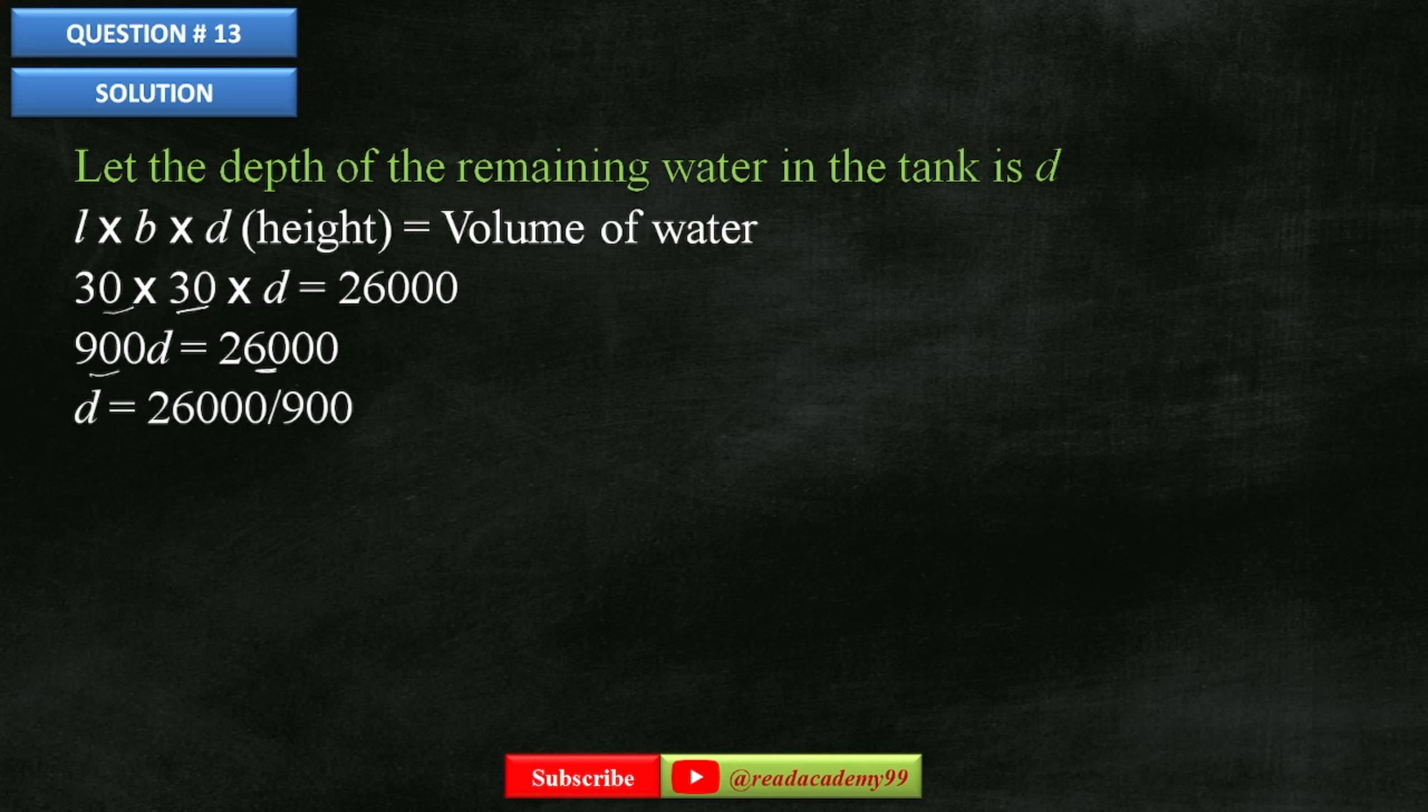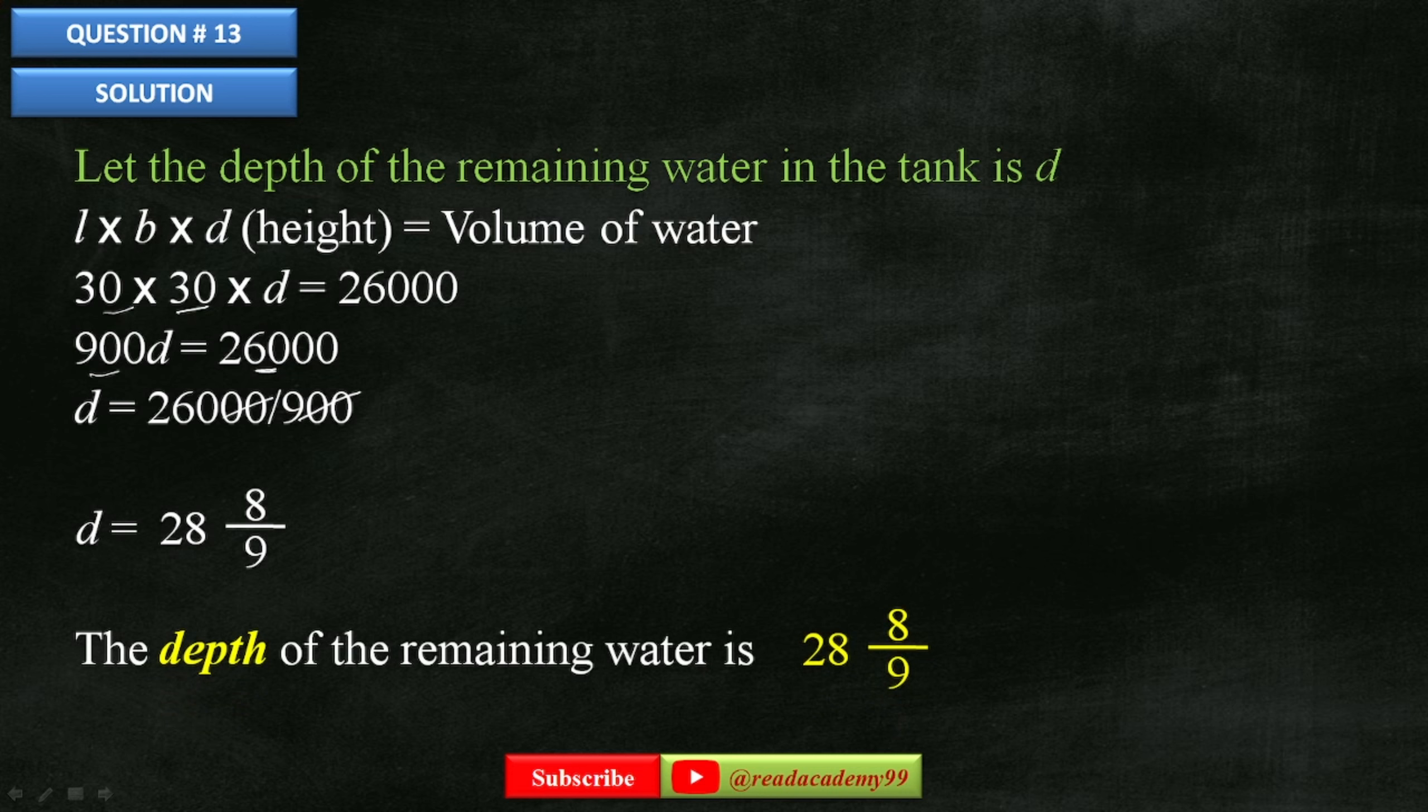Cancel these zeros and simplify: 260 over 9. So D equals 28 and 8/9. So the depth of the remaining water is 28 and 8/9 cm.